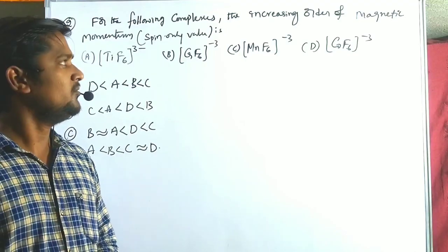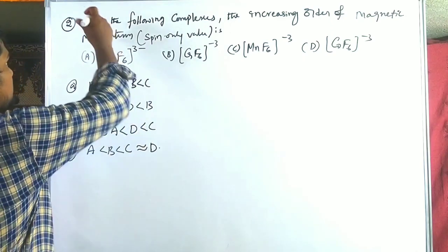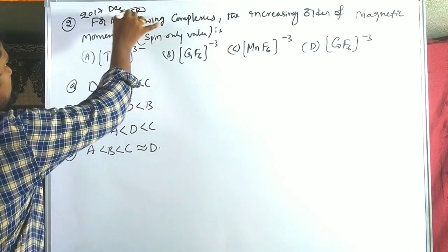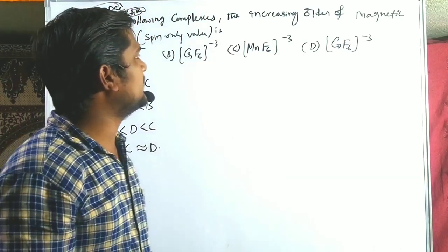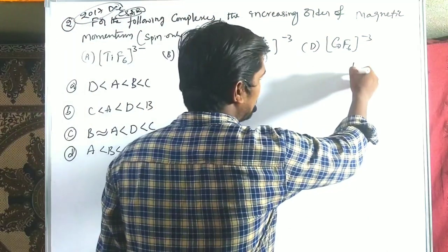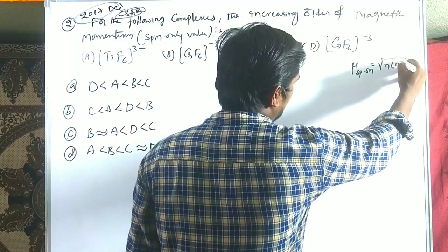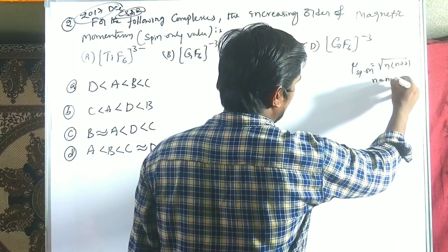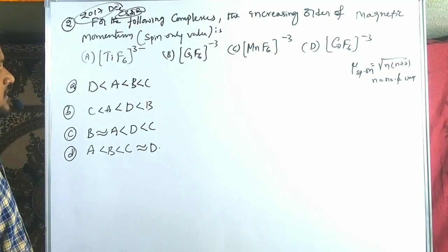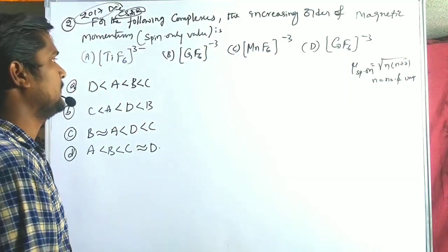Now we solve the second problem from CSIR December 2017, a 4-marker. The question asks for the increasing order of magnetic moment for a series of complexes. We know the spin-only magnetic moment formula: μ = √(n(n+2)), where n is the number of unpaired electrons. Increasing order means from lesser to higher magnetic moment.